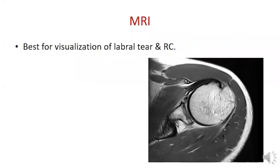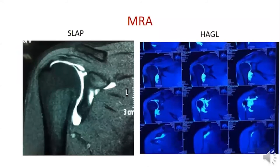MRI is best for visualization of soft tissue such as Bankart repair, labral tears, and rotator cuff tears. MRI is more sensitive and specific especially for SLAP lesions and HAGL lesions.